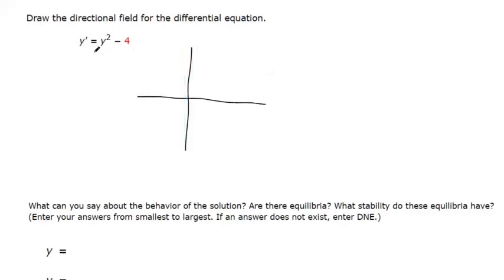If you're drawing a directional field, what you're drawing are a bunch of slopes. So y prime is talking about the slopes of this relation, right? And so to find out the slopes, you can pick any point.